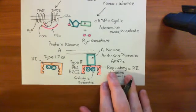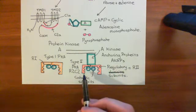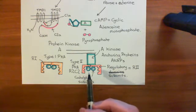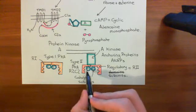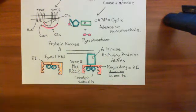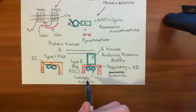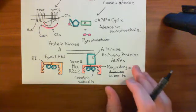When that happens, the regulatory subunits — whether type 1 or type 2 — will change conformation and release the catalytic subunits, which then become activated. It's important to stress that when the catalytic subunits are bound to the regulatory subunits, they are not active and are not capable of phosphorylating serine and threonine residues. Only once the regulatory subunit releases the catalytic subunit can it add phosphate groups onto serine and threonine residues.